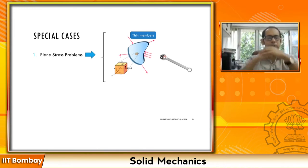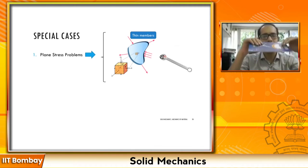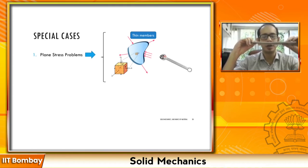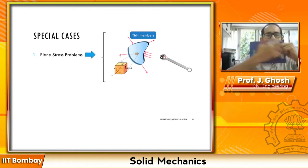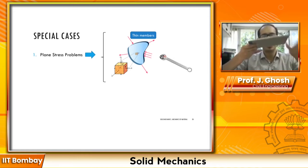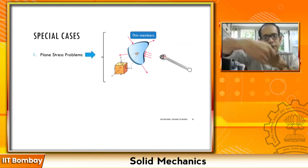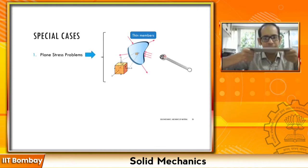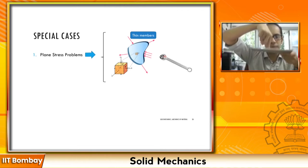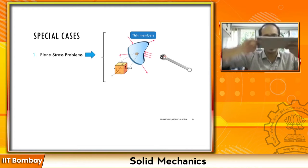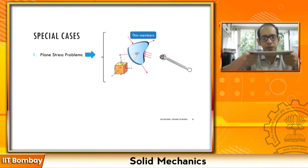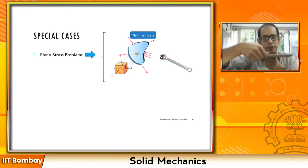A very practical example is the thin plate. If you imagine a plate where the z direction is extremely small compared to x and y, that's a thin plate. Thin plates are typically loaded in-plane — you pull it like this. They don't get out-of-plane loading, which could cause buckling. So the application of thin plates mostly involves in-plane loadings.